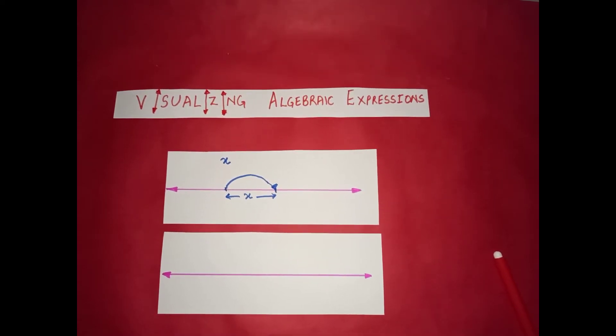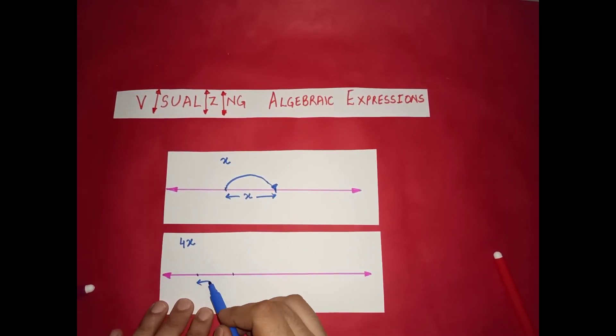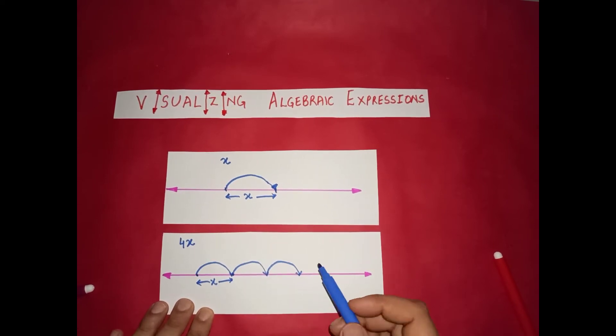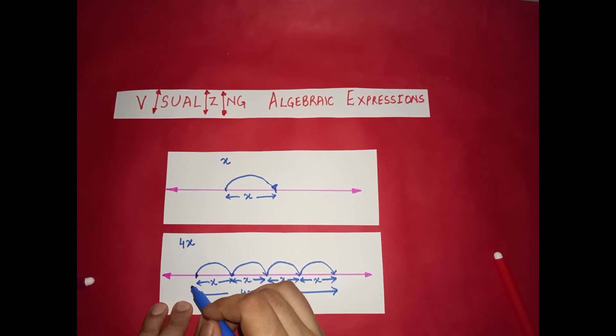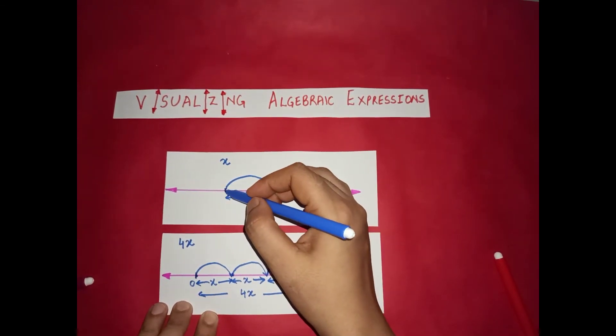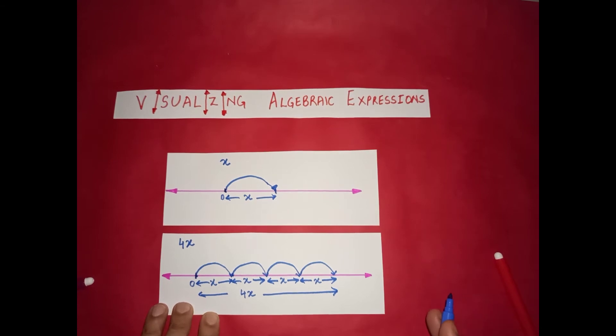Now let us visualize 4x. Just give the video a pause and think for a minute. 4x means 4 times x, and 4 times x means we have to make 4 jumps of x. This is 0. We are starting from 0, so the numbers to the right of 0 are positive.